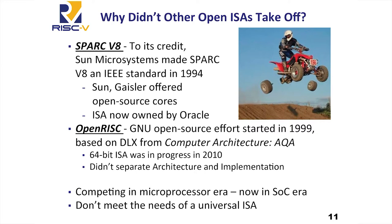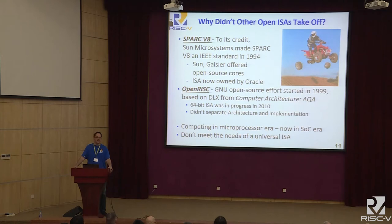We're not the first people to think about doing an open ISA — there's been a lot of previous work. To their credit, Sun, back in 1994, made the SPARC V8 ISA an open standard — actually an IEEE standard. Sun open-sourced some cores, and there's also a company, Gaisler Research, that developed an open-source Leon core as well. So there was some success there. I'd say both Sun and Gaisler suffered a bit from using GPL to license their cores, and GPL doesn't really work well with the hardware industry.